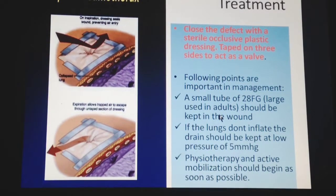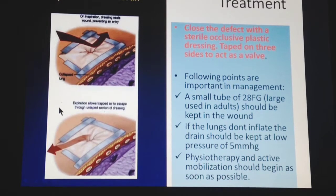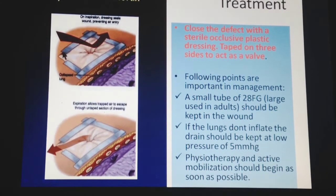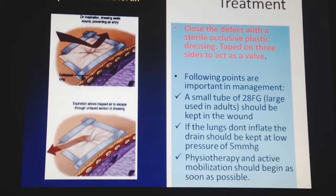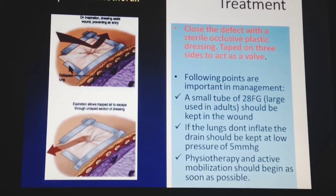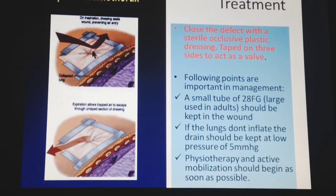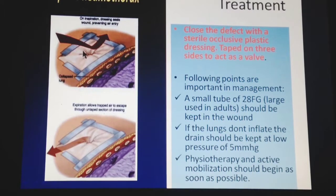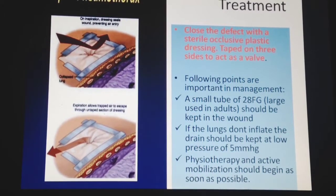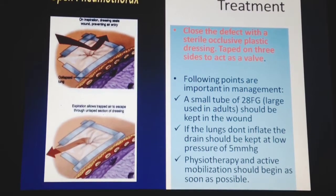Treatment of a sucking chest wound involves first closing the defect with a sterile occlusive plastic dressing taped on three sides to act as a valve. This is not a definitive treatment but prevents further lung collapse or development of tension pneumothorax. Afterwards, a chest tube of approximately 28 French gauge is inserted. If the lung does not re-inflate, a pressure of 5 cmH2O is applied. Physiotherapy and active mobilization follow.